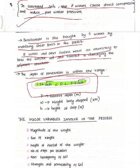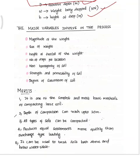The major variables involved in the dynamic compaction process include: magnitude of the weight, size, height of drop, number of drops per location, non-homogeneity of the soil, and strength and permeability. The degree of saturation of the soil also depends on these compaction variables.